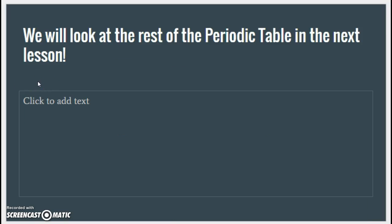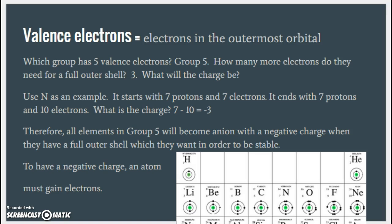We will look at the rest of the periodic table in the next lesson. I know it's a short video, but I covered a lot of important things: charges, anions, ions, halogens, noble gases, and valence electrons. As always, make sure you do the worksheet and check your answers before you take the quiz, and if you have questions, please let me know.